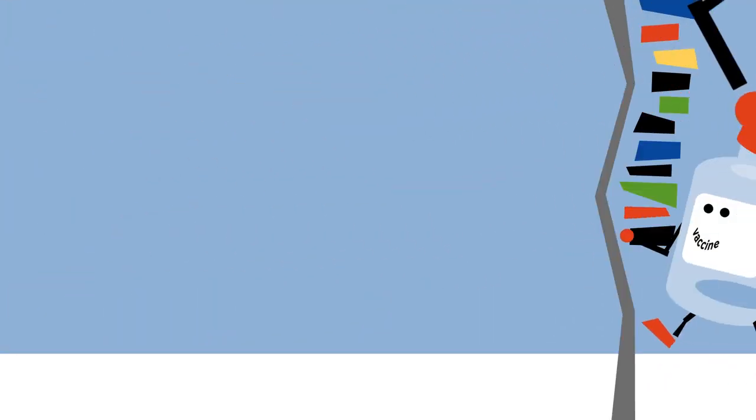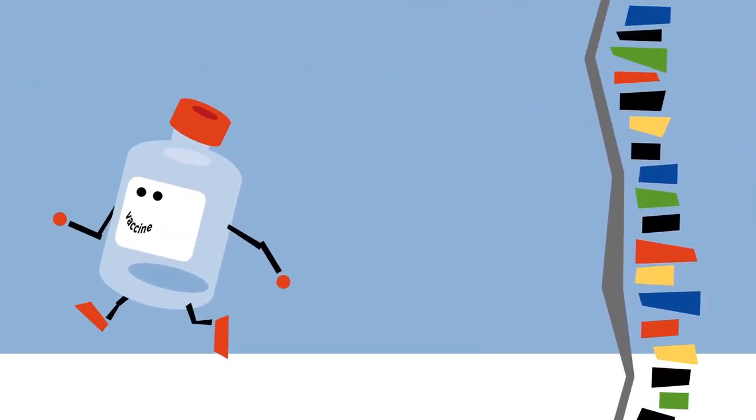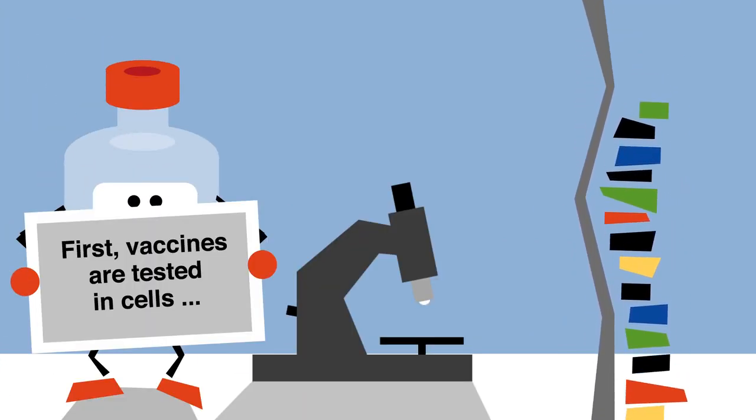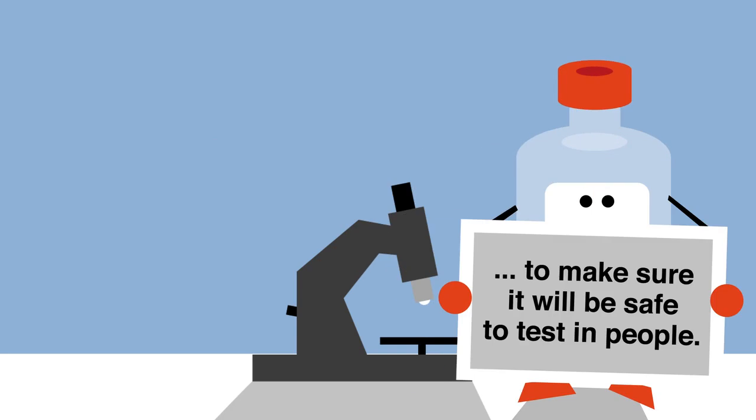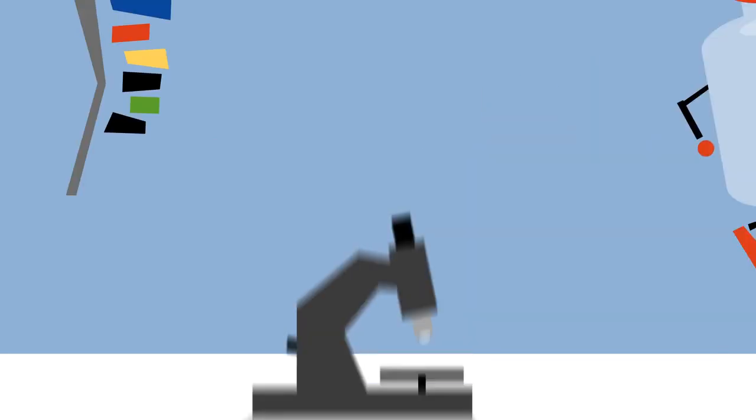The process to ensure that a vaccine is safe and effective involves a series of steps. First, scientists and doctors test the vaccine in cells to determine early on whether it will be safe to test in people.